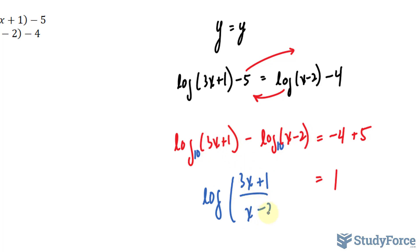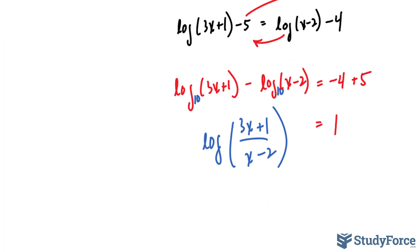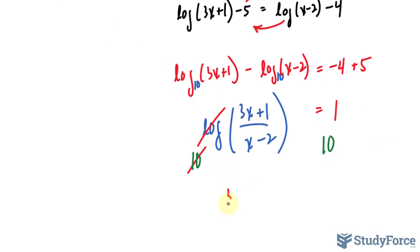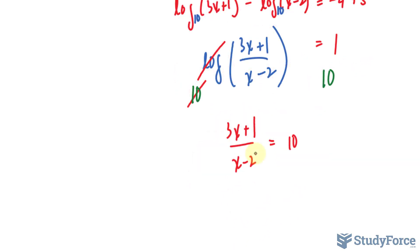Because these are both logs of base 10 — common logs, base assumed to be 10 — we can combine them using the quotient rule: if two logs of the same base are subtracted, you can write them as a quotient. So log of (3x + 1) divided by (x minus 2) equals 1. To isolate for x, I need to get rid of this log by raising both sides as powers of base 10, giving us (3x + 1) over (x minus 2) equals 10 to the power of 1, which is 10.